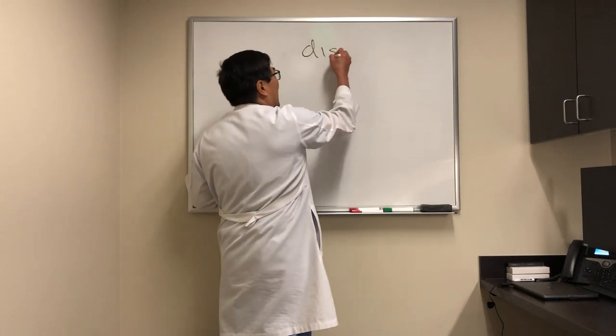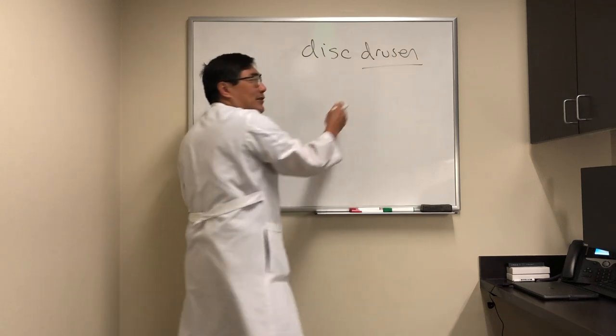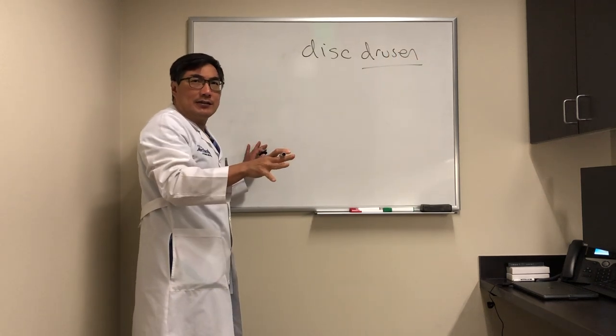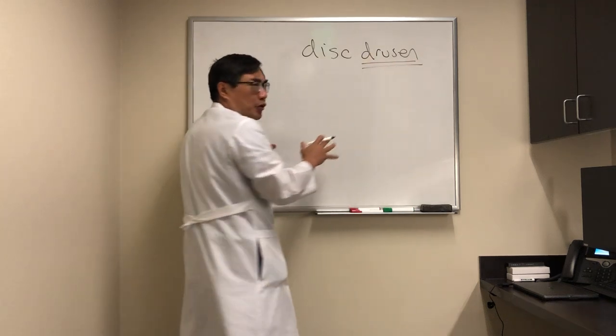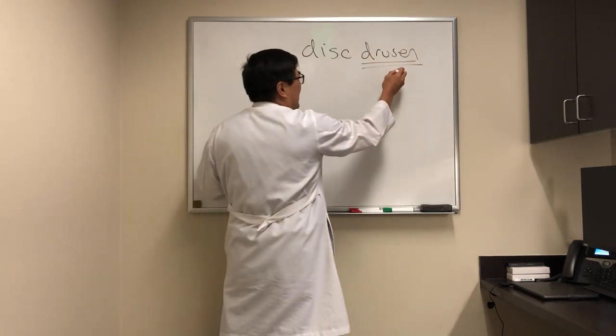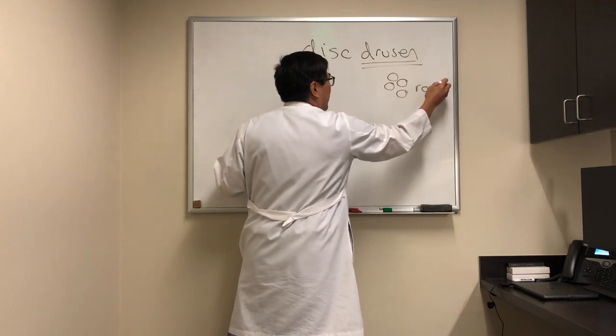All right, today we're going to be talking about optic disc drusen. These drusen are different than the retinal drusen that we see in age-related macular degeneration, which has nothing to do with these drusen. They both have the same word, however, and it means like a rock or a crystal in German, drusen.